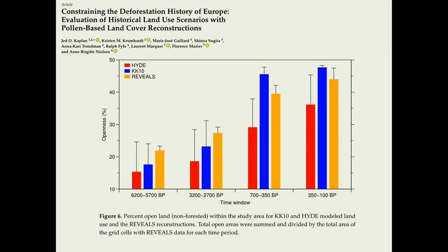The HIDE and KK10 are represented here and you can see they're similar-ish but clearly not the same. Then this is the REVEALS reconstruction from pollen data of land cover. You can see that according to the pollen data, both models are significantly underestimating openness at 6,200 to 5,700 BC.